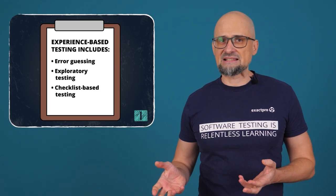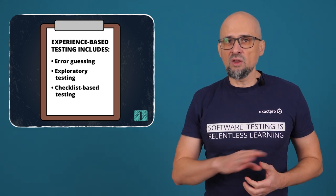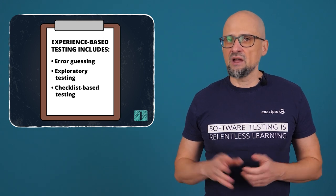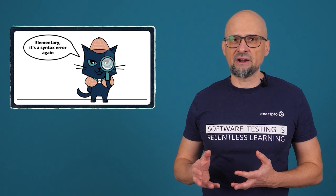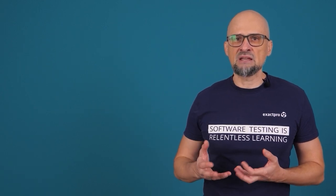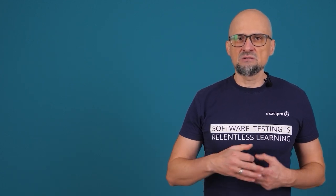Experience-based testing includes error guessing, exploratory testing, and checklist-based testing, all of which can be applied to the testing of AI-based systems. Error guessing is typically based on the testers' knowledge of typical developer errors and failures in similar systems. An example of error guessing applied to AI-based systems could be the use of knowledge about how machine learning systems have failed in the past due to the use of systematically biased training data.